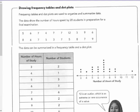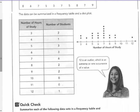Next page. Drawing a frequency table and dot plots. Frequency tables and dot plots are used to organize and summarize data. The data show the number of hours spent by 20 students in preparation for a final examination. The data can be summarized in a frequency table. Usually, I have your data, what you're keeping track of, and usually there's a tally column here, and then your total frequency or number of times that appeared.